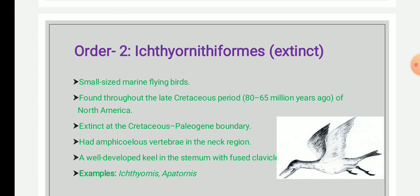The representative of order Ichthyornithiformes was a small-sized marine flying bird found during the upper Cretaceous of North America, throughout the late Cretaceous period, about 80 to 65 million years ago. They became extinct at the Cretaceous-Paleogene boundary. They had amphicoelous vertebrae in the neck region and a well-developed keel in the sternum with fused clavicles. The example is Ichthyornis.